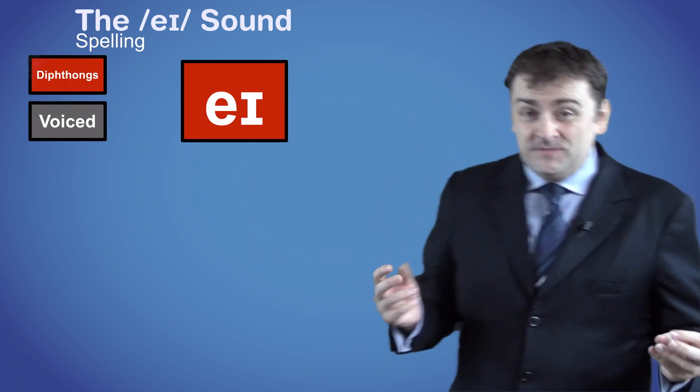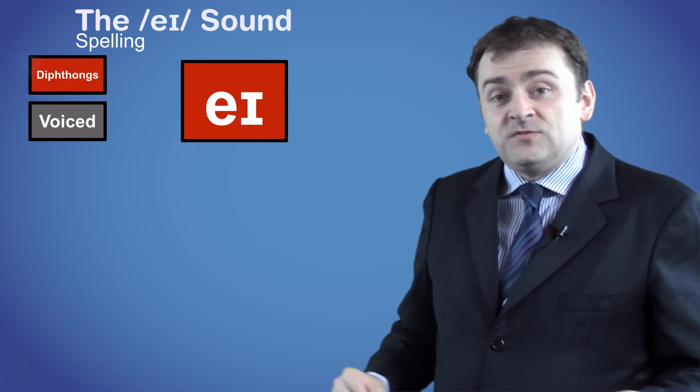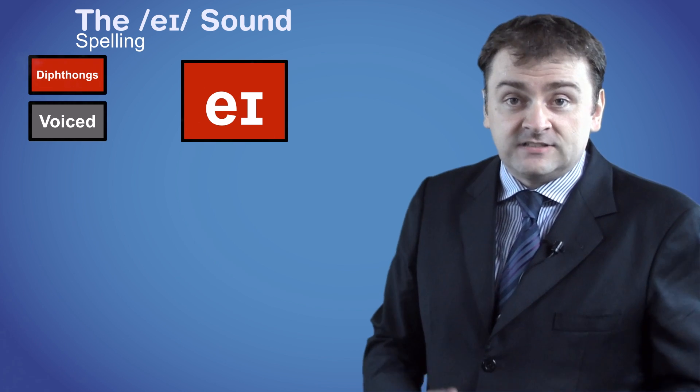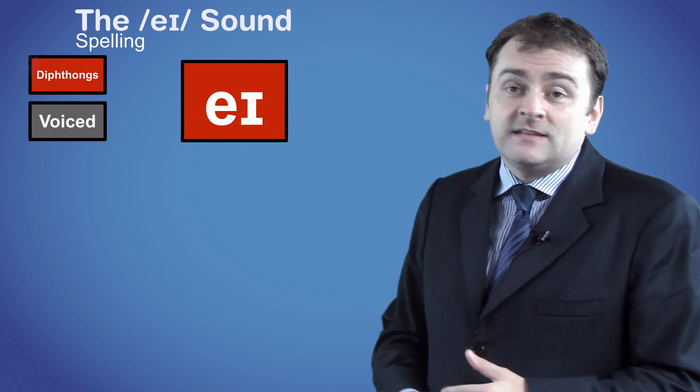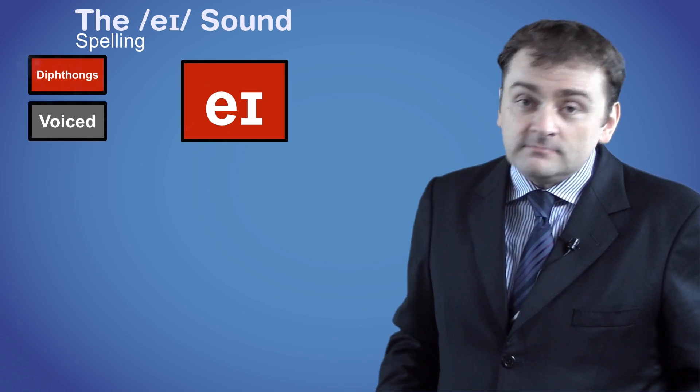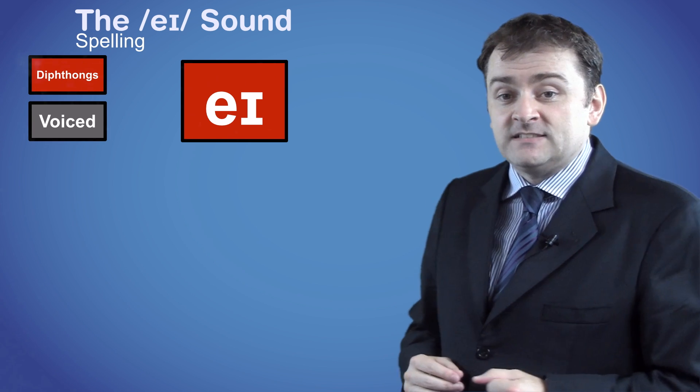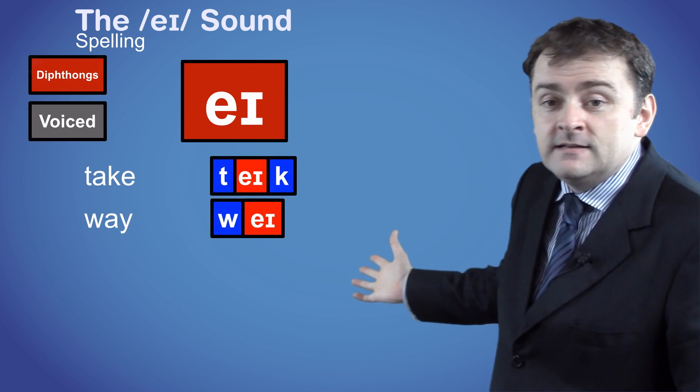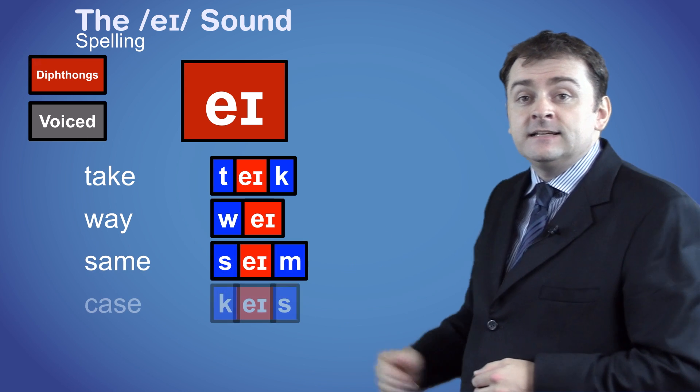One of the most difficult things about learning English is the spelling. This is because spelling is often not phonetic, especially with the vowels and diphthong sounds. So you will find the EY sound spelled in many different ways, but it is often spelled with the letter A, as in the words TAKE, WAY, SAME and CASE.